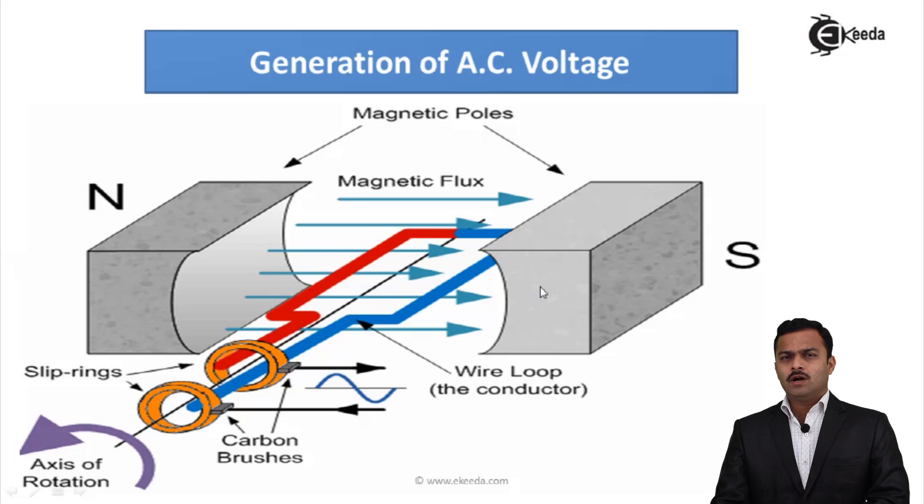So here what we have considered is movement of conductor and having steady magnetic field. So obviously, this magnetic field will get cut by conductors by its rotation. The thing is that here we are having three terms.